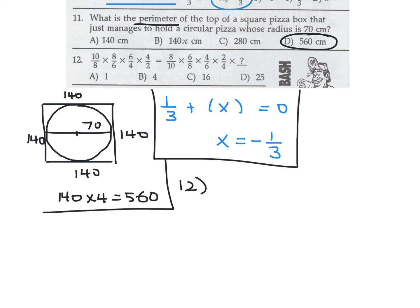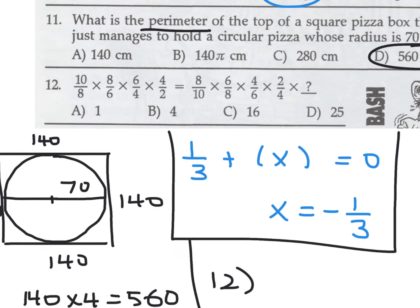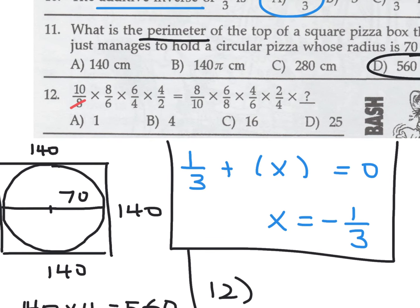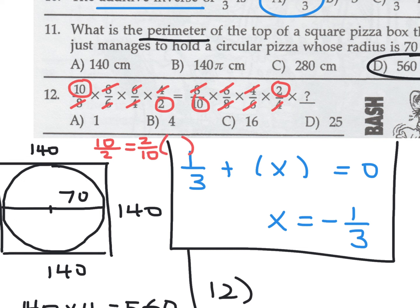Number 12 involves a fraction chain. You can cancel: 8 with 8, 6 with 6, 4 with 4 on both sides. You're left with 10 over 2 on one side equal to 2 over 10 times some number x. Cross-multiplying gives 5 times 5, so x equals 25. Number 12 is D.